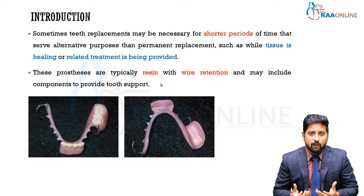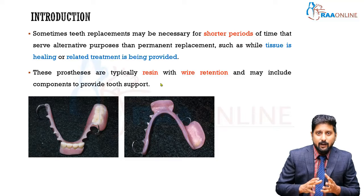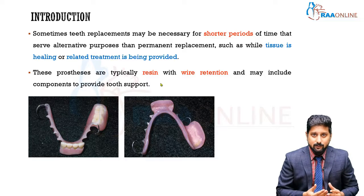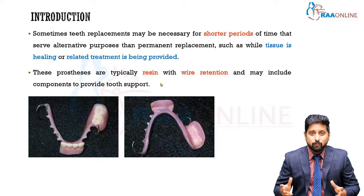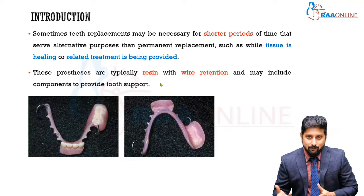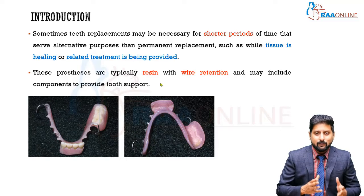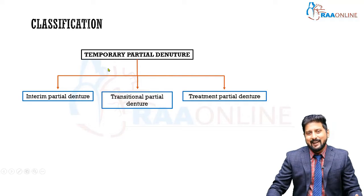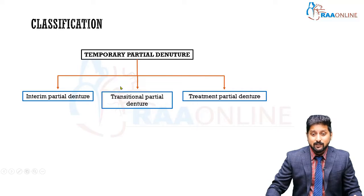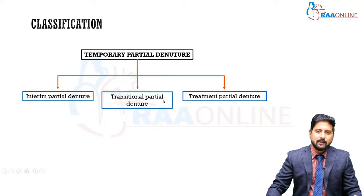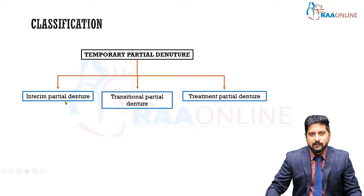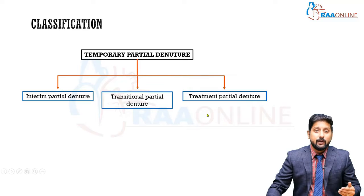Even though you've explained to the patient that certain procedures are needed before tooth replacement, that period could be one, two, three, or even four months — and the patient cannot be without teeth during that time. In those situations, a temporary removable partial denture is given. You can classify temporary partial dentures into interim, transitional, and treatment types. The transitional partial denture is a synonym for the immediate partial denture.